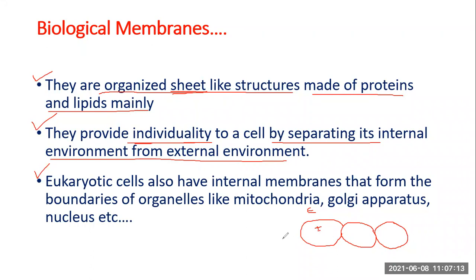For example, you have mitochondria within the cell, and the mitochondria boundary is also made up of biological membrane. You have the Golgi apparatus, the nucleus, peroxisomes, and many other cellular organelles — their boundaries are also made up of biological membranes. The membranes of these organelles are similar structurally as well as functionally to the plasma membrane.